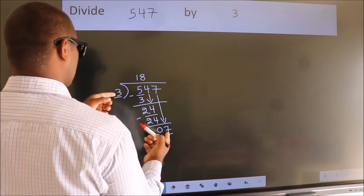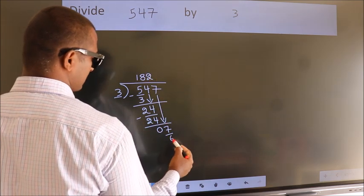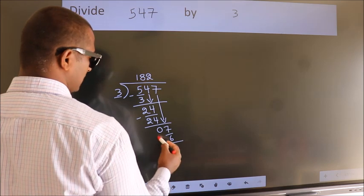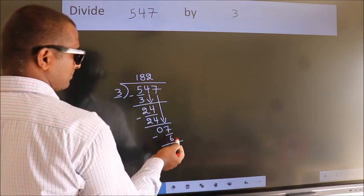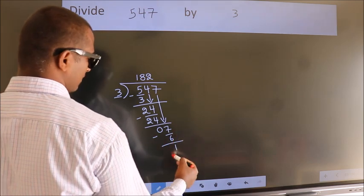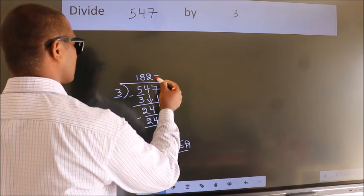Now we subtract, we get 1. No more numbers to bring down, so we stop here. This is our remainder, this is our quotient.